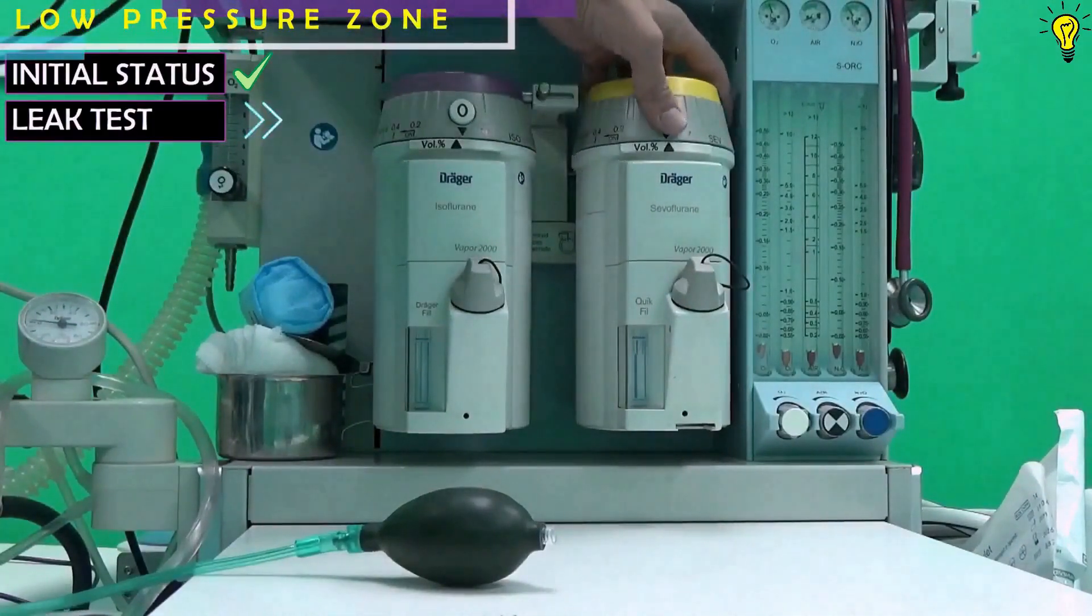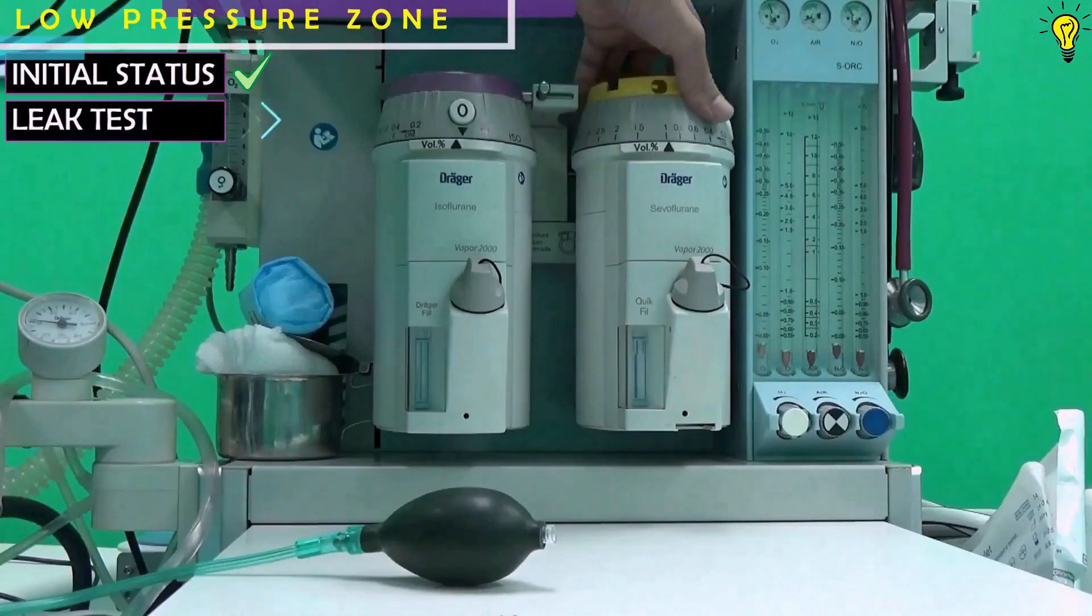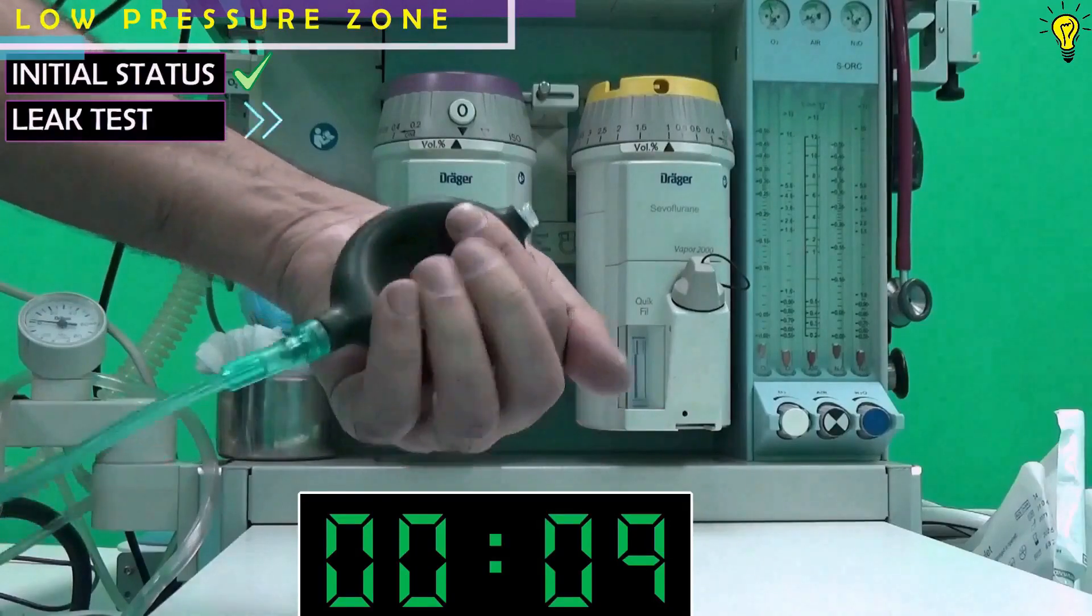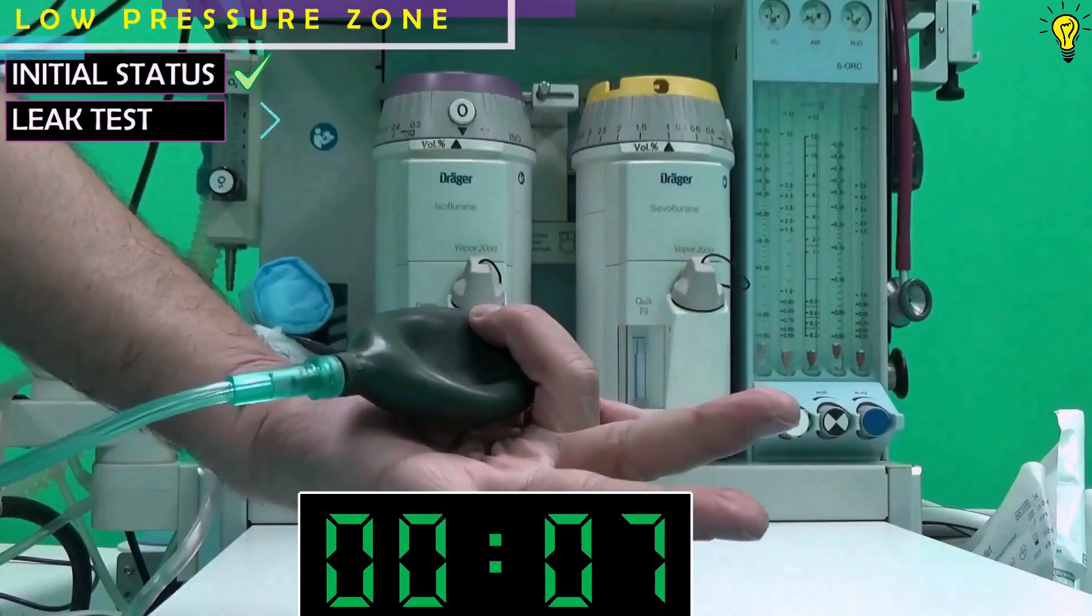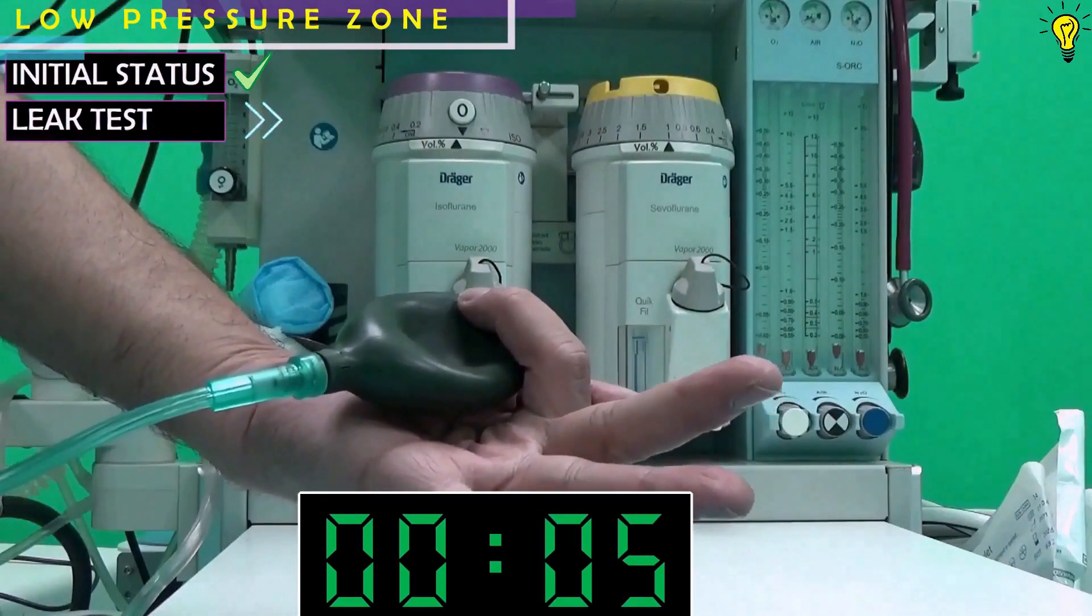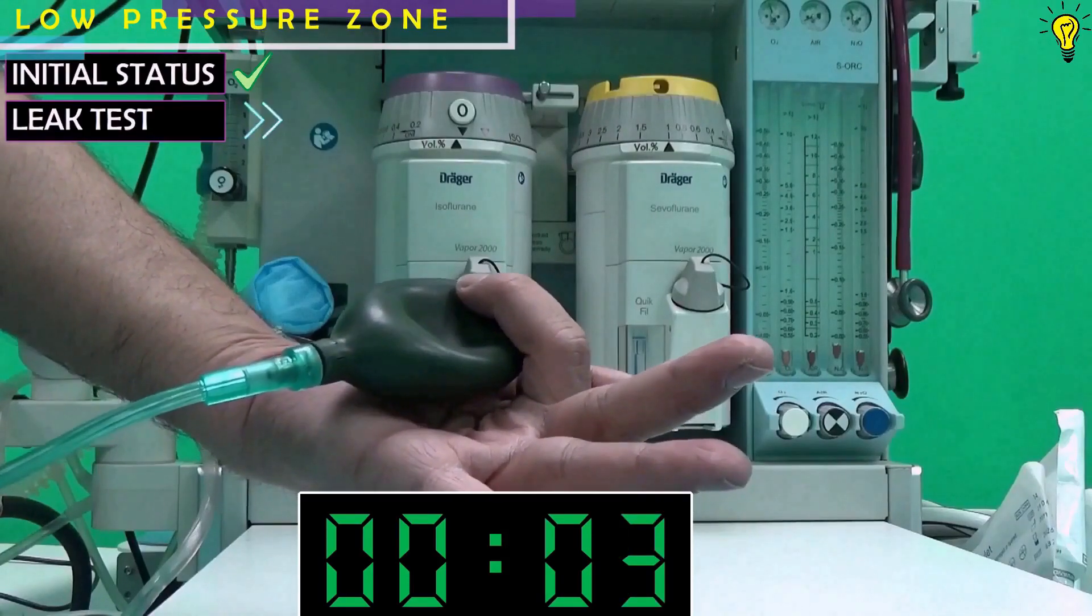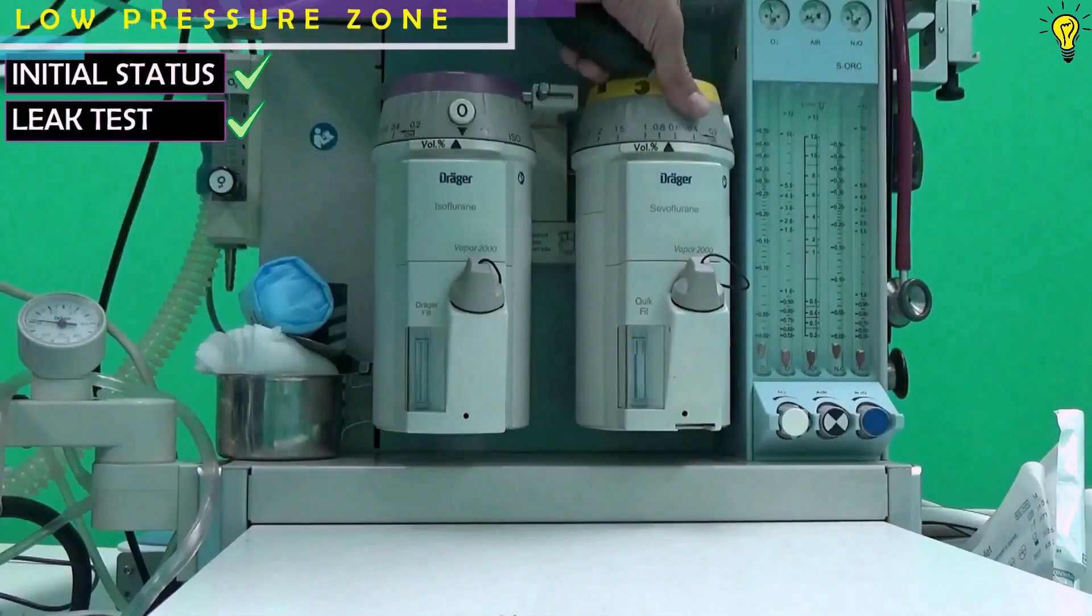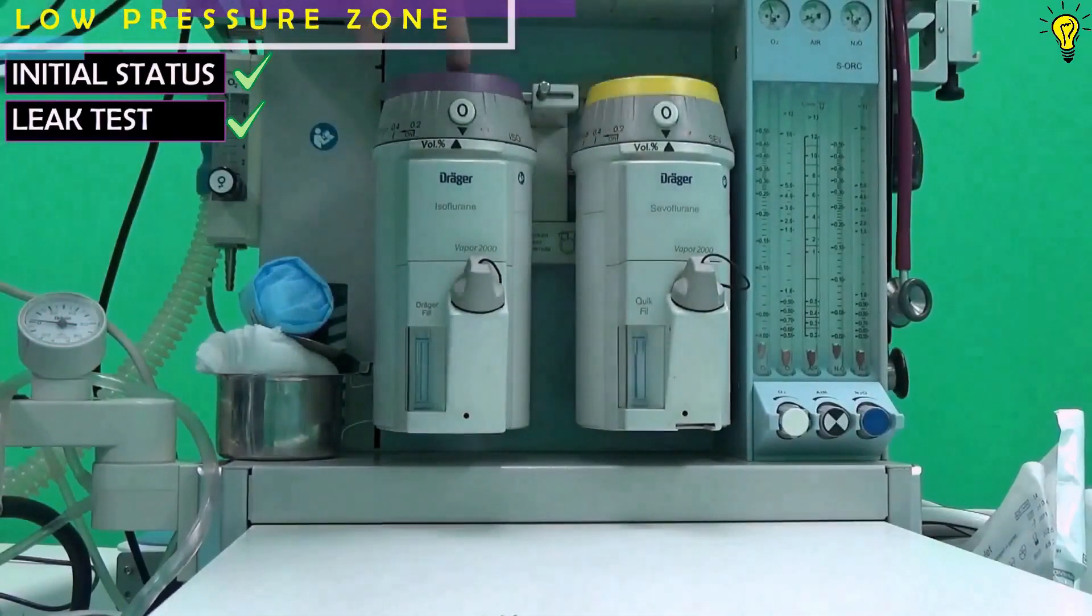Next up, I am going to turn on one vaporizer and squeeze the bulb again, till it is fully deflated and I am going to see for 10 seconds if it re-inflates. It has not re-inflated. So there is no leak in this vaporizer. Repeat this process for the other vaporizer as well.